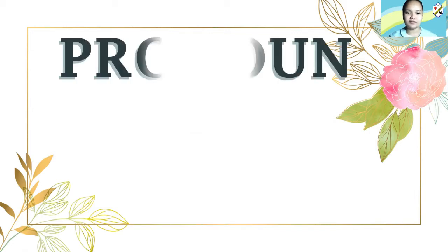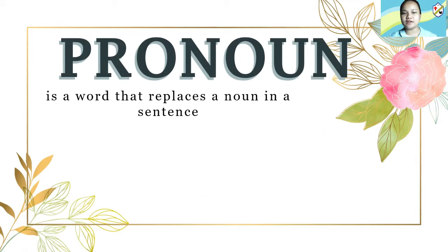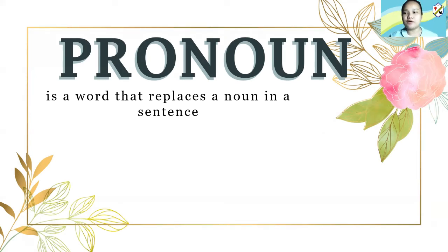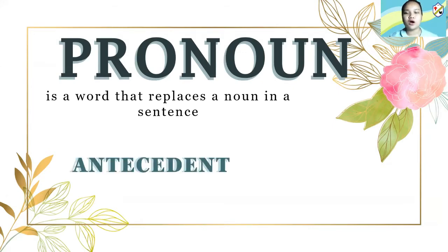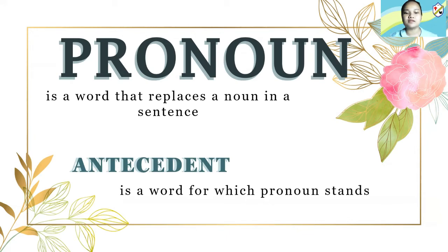Those words are what we call pronouns. When we say pronoun, it is a word that replaces a noun in a sentence. Instead of always using nouns, we have the pronoun to help us. The noun that we replace by a pronoun is what we call antecedent. When we say antecedent, it is a word which the pronoun stands for.